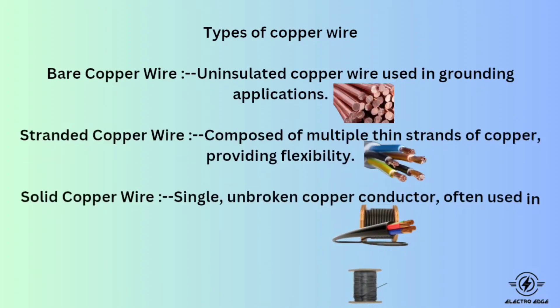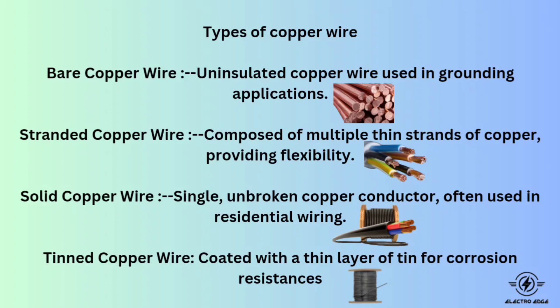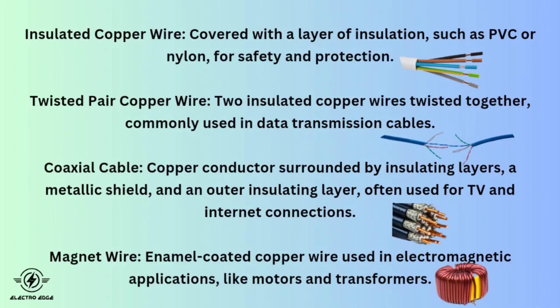Types of copper wire: Bare copper wire is uninsulated copper wire used in grounding applications. Stranded copper wire is composed of multiple thin strands of copper, providing flexibility. Solid copper wire is a single unbroken copper conductor often used in residential wiring. Tin copper wire is coated with a thin layer of tin for corrosion resistance.